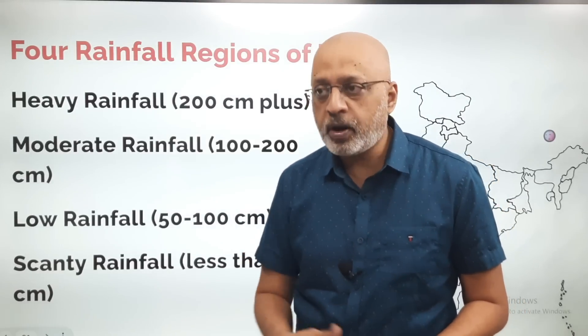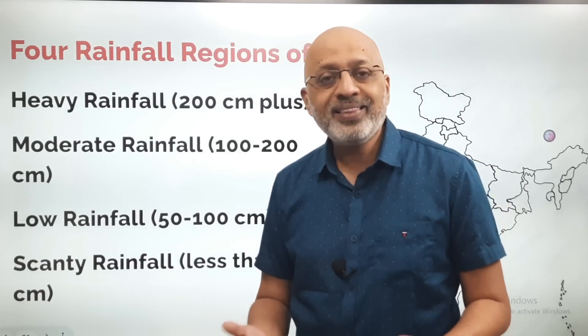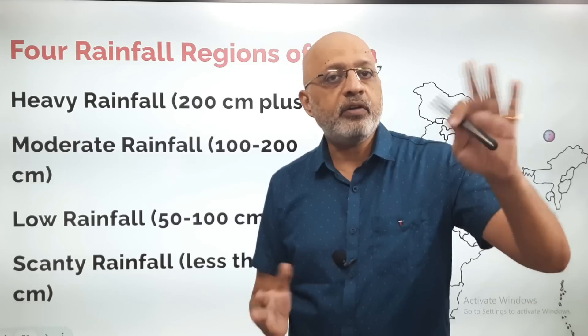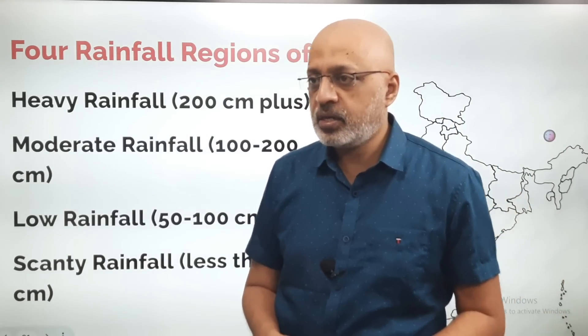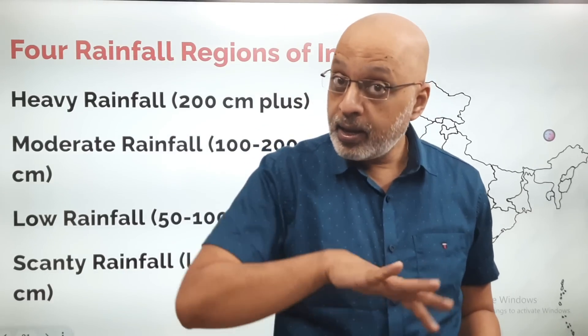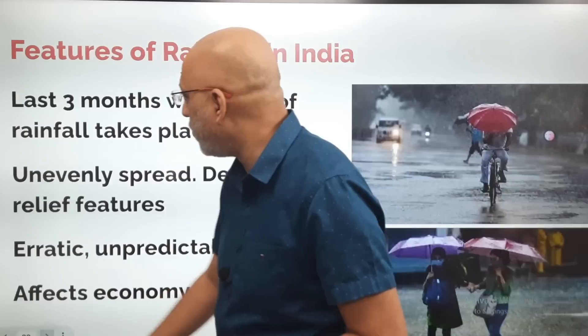Low rainfall areas also include Punjab, Kashmir, and other regions. Scanty rainfall — very obviously — covers the areas in Rajasthan and also the rain shadow areas on the eastern side of the Western Ghats. Now let's look at the features of rainfall in India.